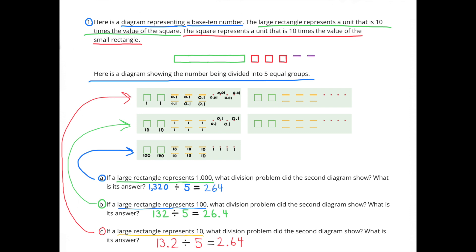Part C: If a large rectangle represents 10, what division problem did the second diagram show? If the large rectangle is worth 10, then the square would be worth 1, and the small rectangle would be worth 1 tenth. 13 and 2 tenths divided by 5 equals 2 and 64 hundredths. Part C's answer is 10 times smaller than Part B's answer, and Part B's answer is 10 times smaller than Part A's answer.